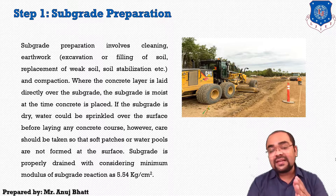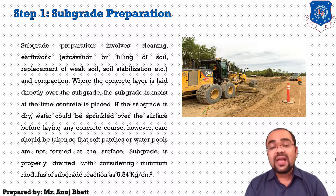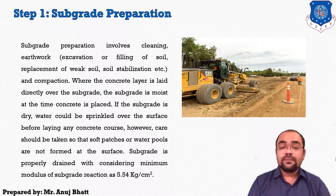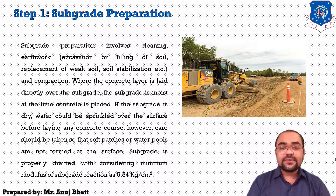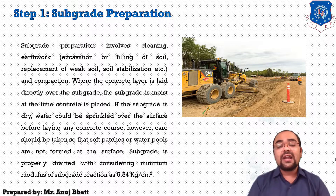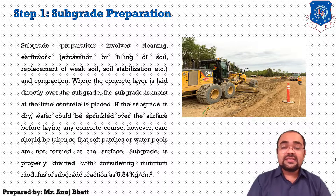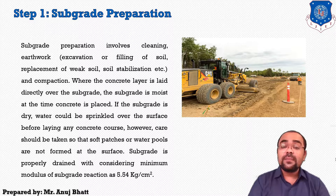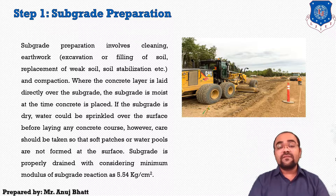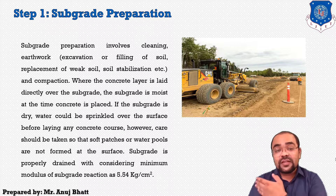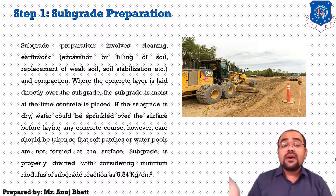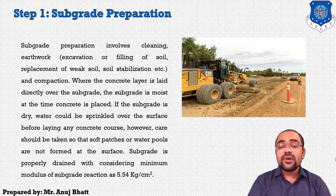Where the concrete layer is laid directly over the subgrade, the subgrade must be moist at the time concrete is placed. If the subgrade is dry, water can be sprayed over the surface before laying any concrete courses. However, care should be taken so that stagnant patches or water pools are not formed. The subgrade must be properly drained, with a minimum modulus of subgrade reaction of 5.54 kg per cm².